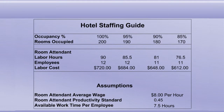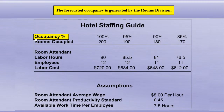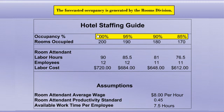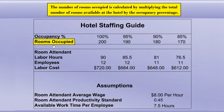Let's view a sample staffing guide to see what the numbers represent. The forecasted occupancy is generated by the Rooms Division. The number of rooms occupied is calculated by multiplying the total number of rooms available at the hotel by the occupancy percentage.